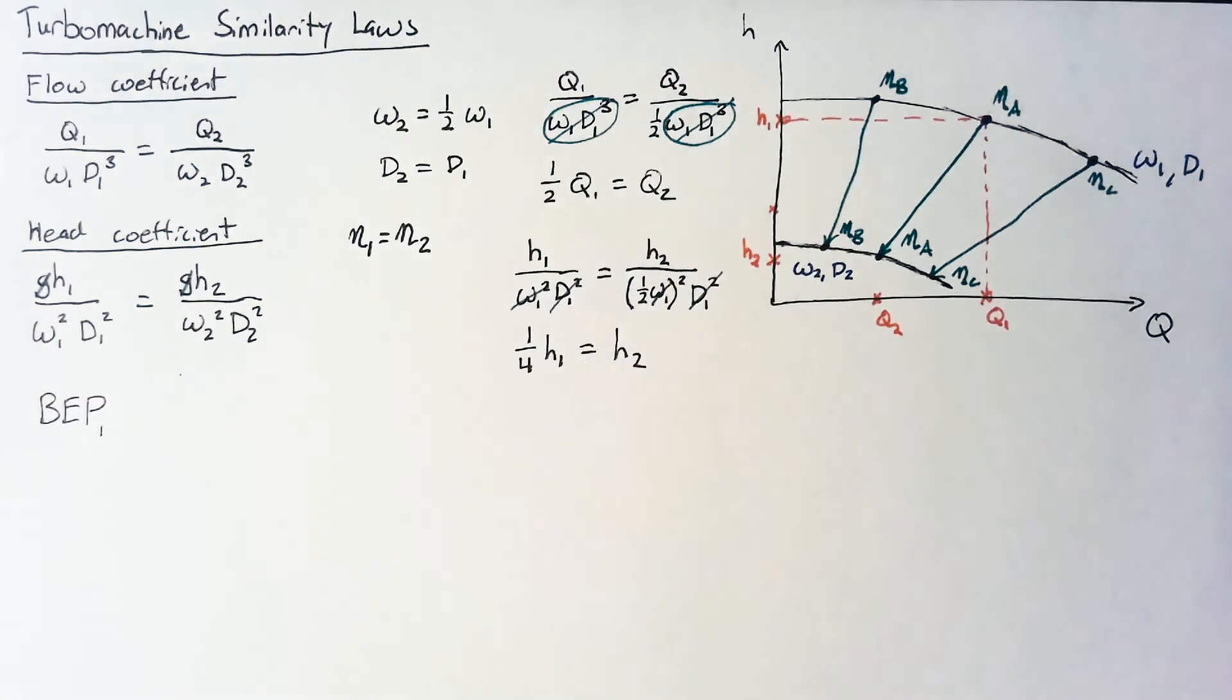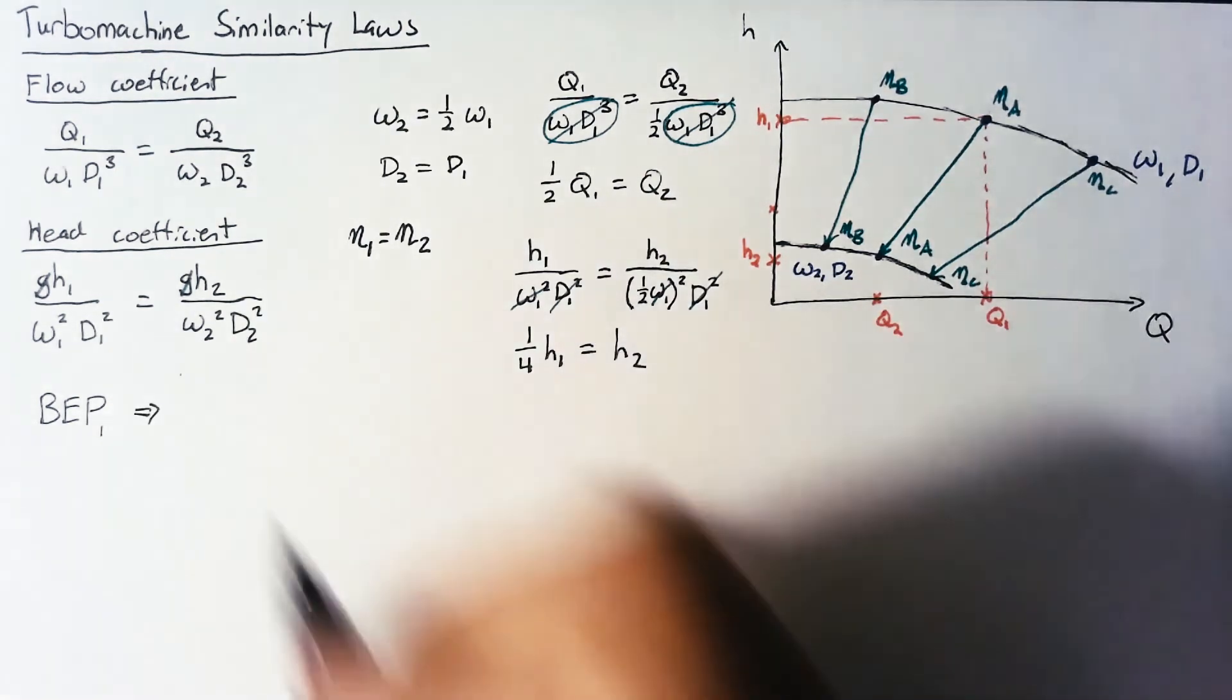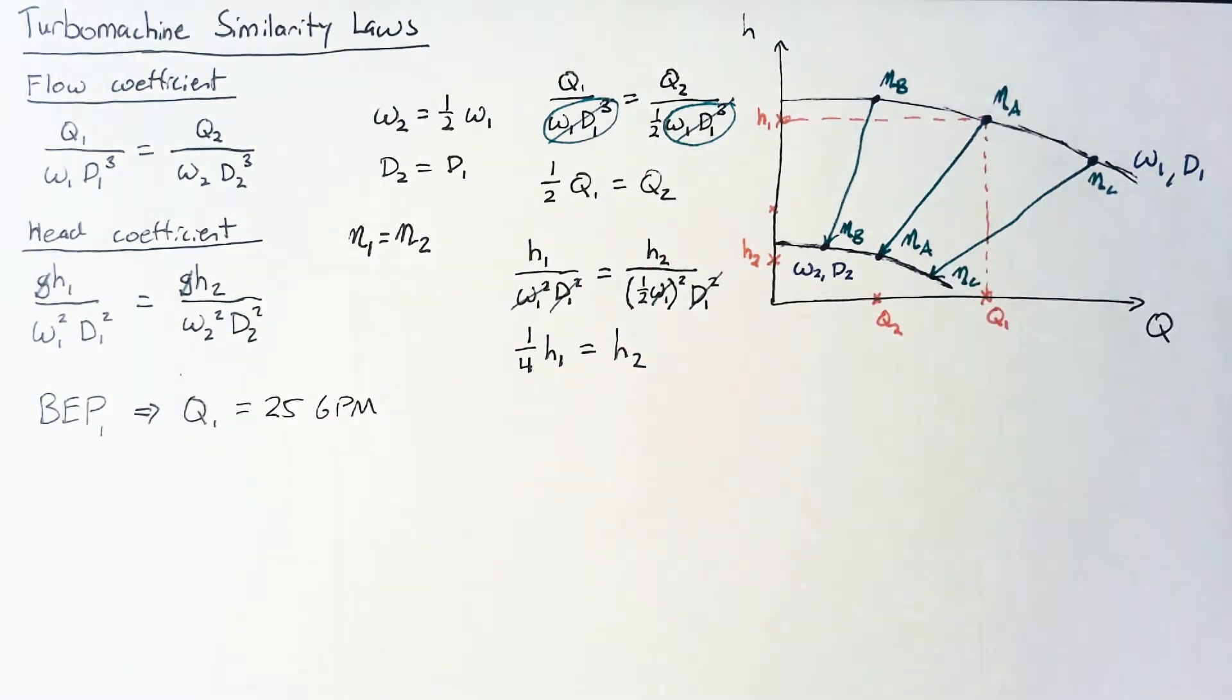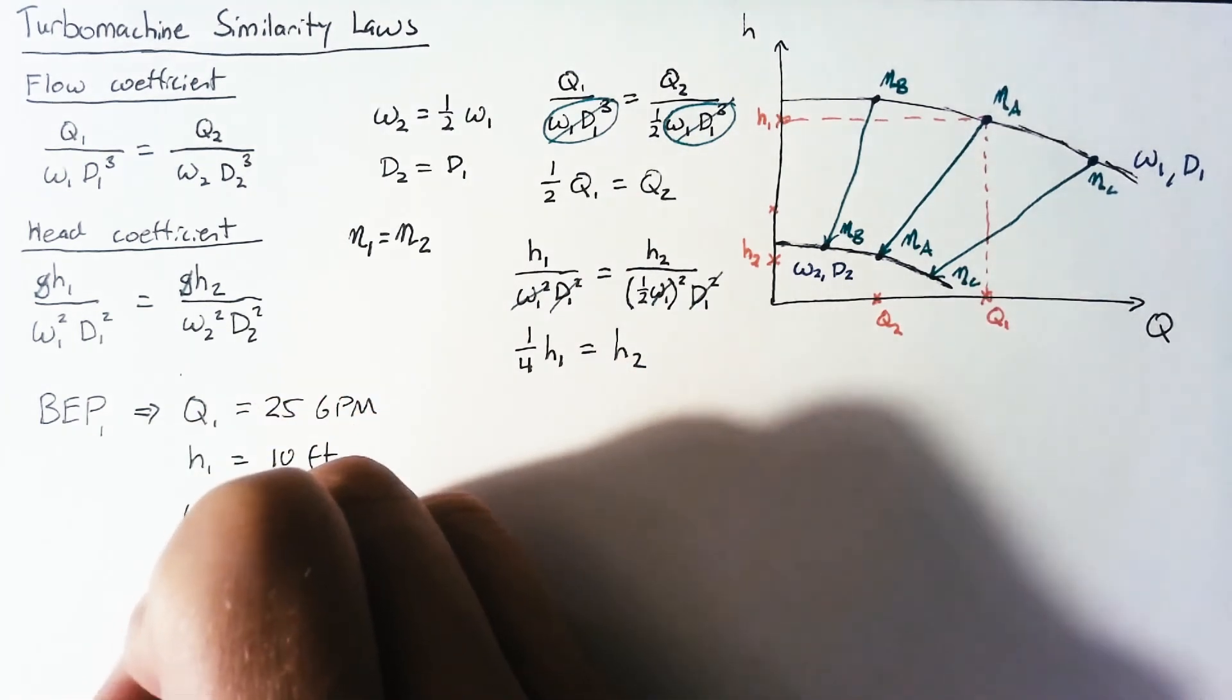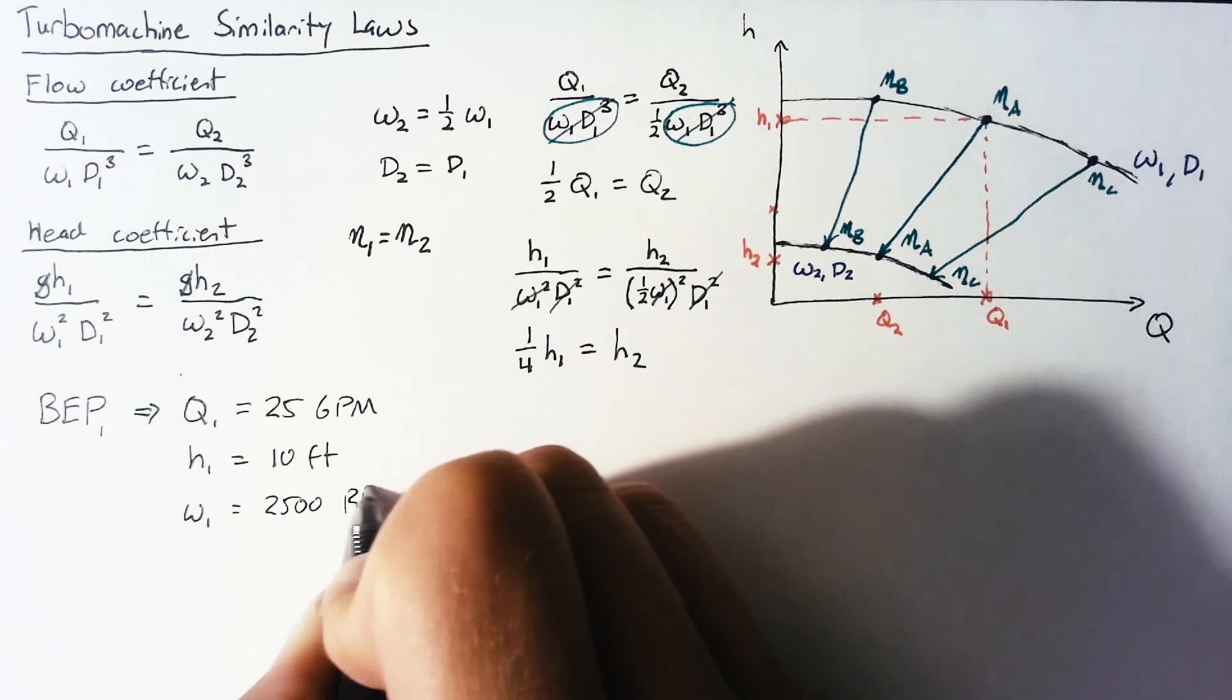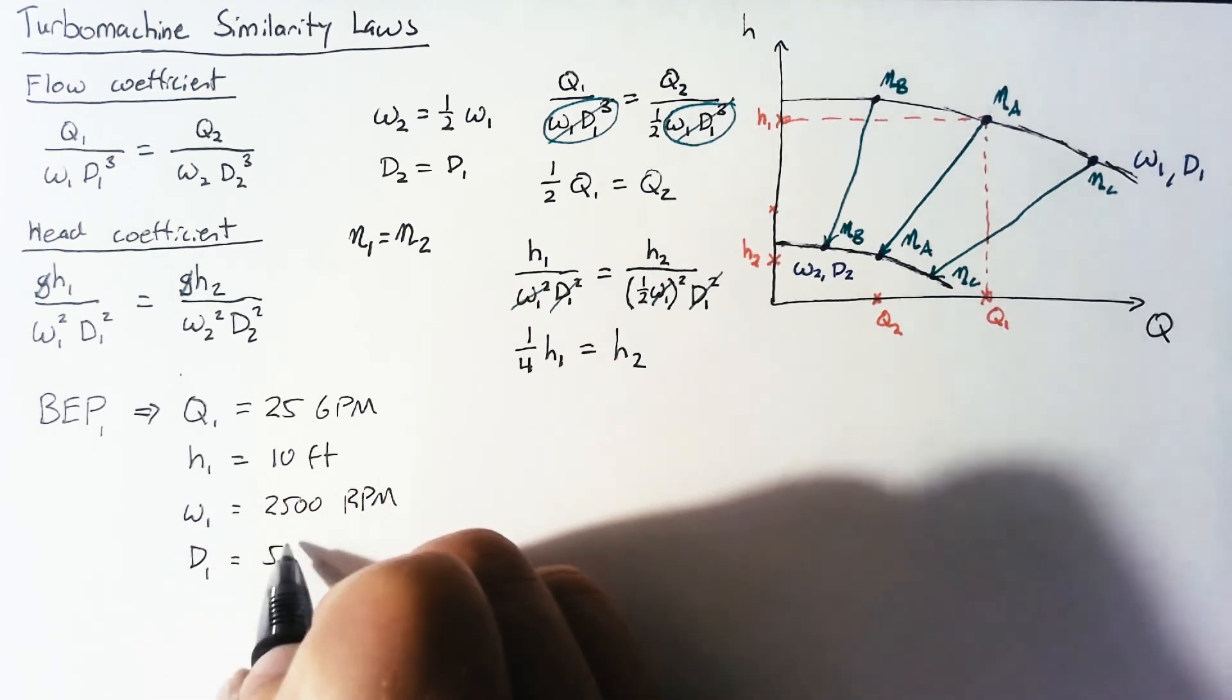Let's say that we have some pump that is already at a best efficiency point. This is our original best efficiency point and what's happening for this point is that we have some Q which we're going to say is 25 gallons per minute. We have some head which is 10 feet and then we know that the pump is running at an angular rate of 2500 rotations per minute and our diameter for this pump is 5 inches.